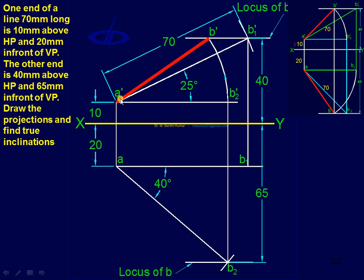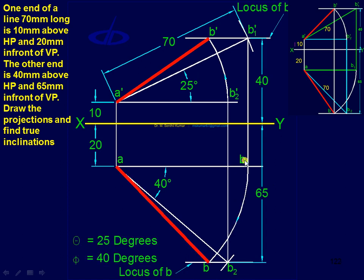Next, draw an arc with A-dash as center and A-dash B2-dash as radius to get B-dash, then draw the line joining A-dash to B-dash — that is the final front view. Similarly, with A as center and A B1 as radius, draw the arc, then draw the line joining A to B — that is the final top view. As a final check, draw a projector from B-dash; it must pass through B.